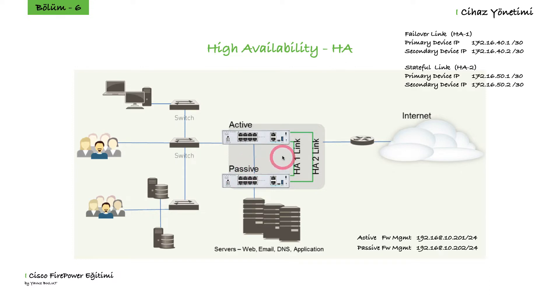Here we have two links on our firewalls. The first is our failover link and the second is our stateful link. I have written the IP addresses we will assign to these ports. Now let's go to the firewall side and start our configuration.